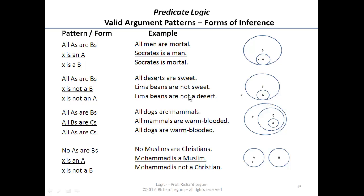Our final good pattern of inference is: no A's are B's — the circle of A's and the circle of B's are completely separate, no overlap or intersection between those two classes of objects. If X is an A, X is contained within the class of A's. For example, Mohammed is a Muslim, so there's no way Mohammed can be a Christian — Mohammed is not a B.